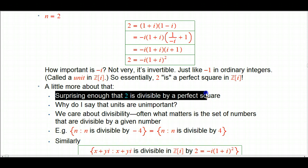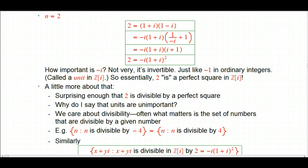I was saying that essentially 2 is a perfect square in z of i. That's not literally true. That's why I put the essentially in there. It's surprising enough that 2, which was prime in the ordinary integers, becomes divisible by anything in the Gaussian integers. And it's very cool that it becomes divisible by a perfect square.